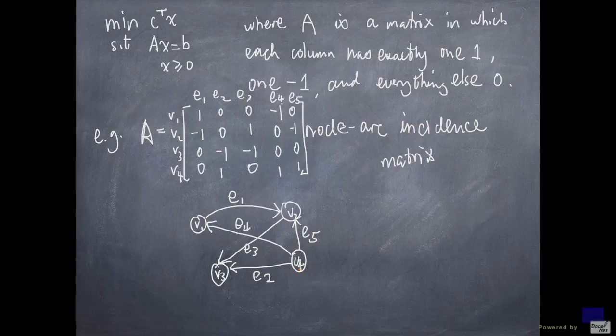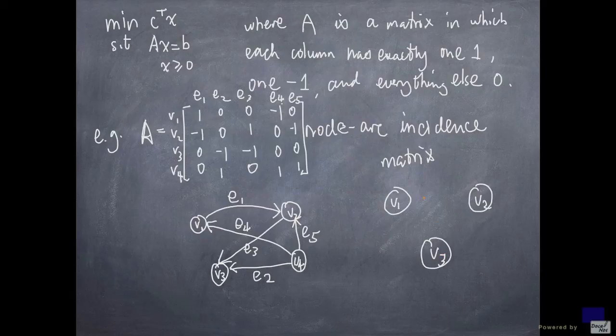Okay? And you can see, I have nodes and I have arcs. Now if I give you this picture, you can write down this matrix A, no problem, right? Because for every picture like this, say I give you this picture, say v1 is here, v2, v3, and I am going to give you this picture.